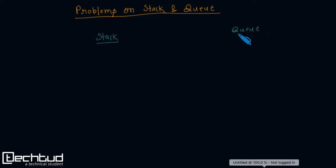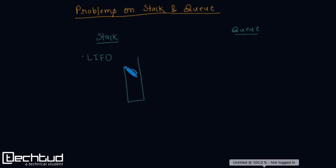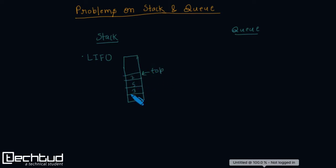Stack follows last in first out property, meaning the element that was inserted last will be deleted first. You can think of the stack as an array where you insert and delete elements from only one end, called the top of the stack. We create an array and insert elements using the top index. To insert, we increase the top index and store the element; to delete, we remove the topmost element.